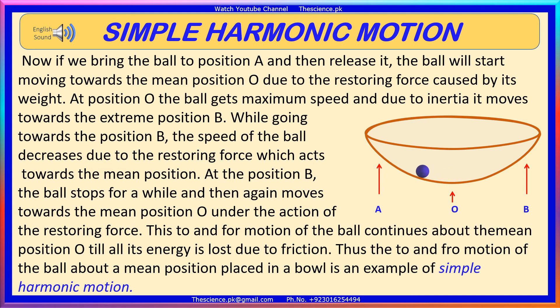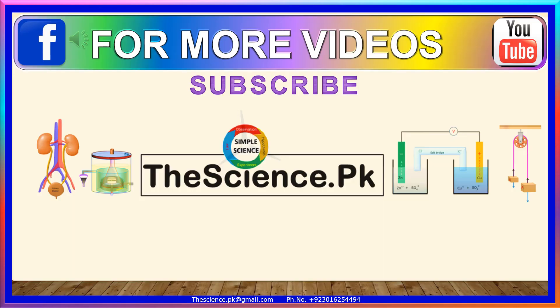Thus, the to-and-fro motion of the ball about a mean position, placed in a bowl, is an example of simple harmonic motion. For more videos, visit YouTube channel: TheScienceDotPK.